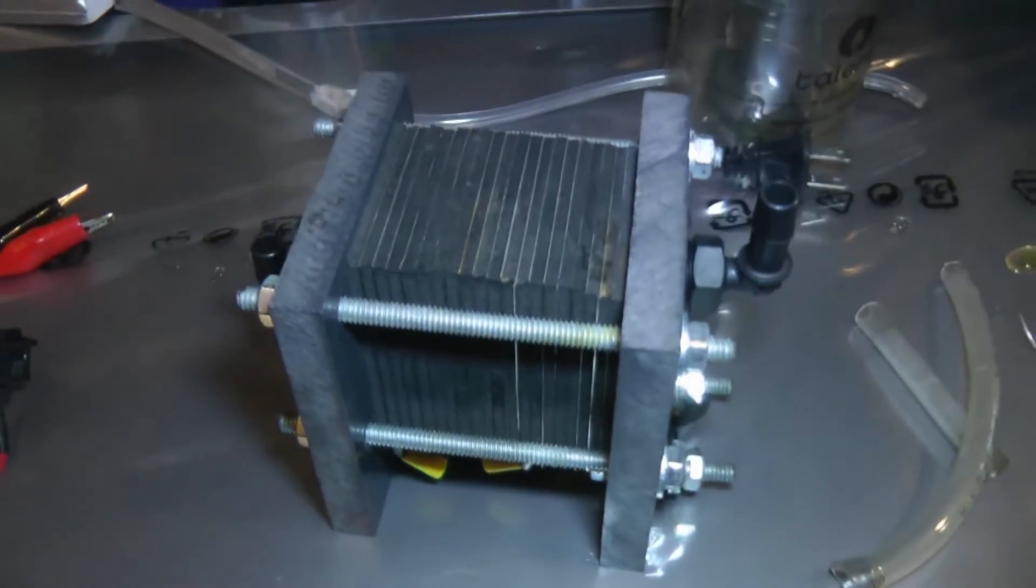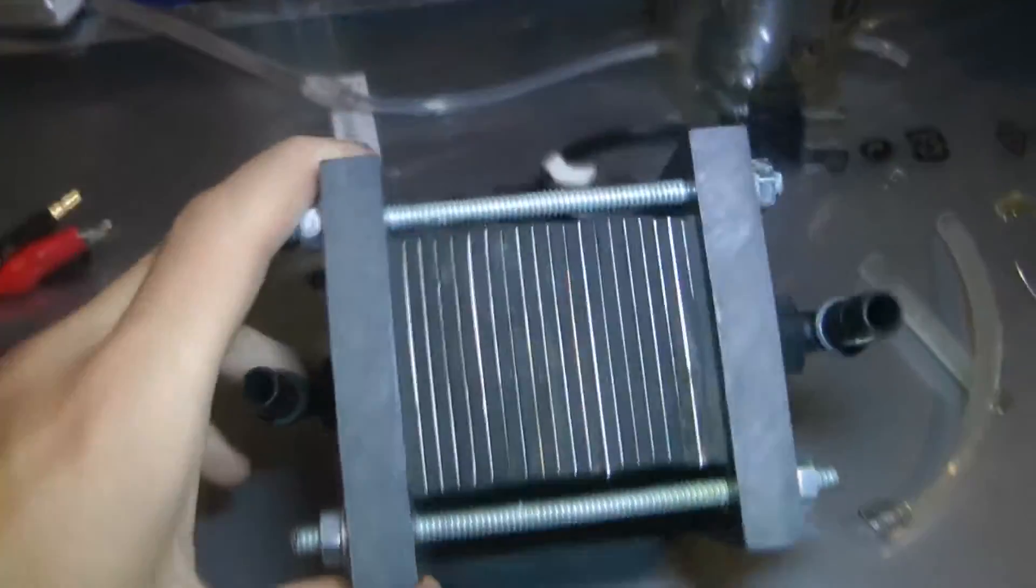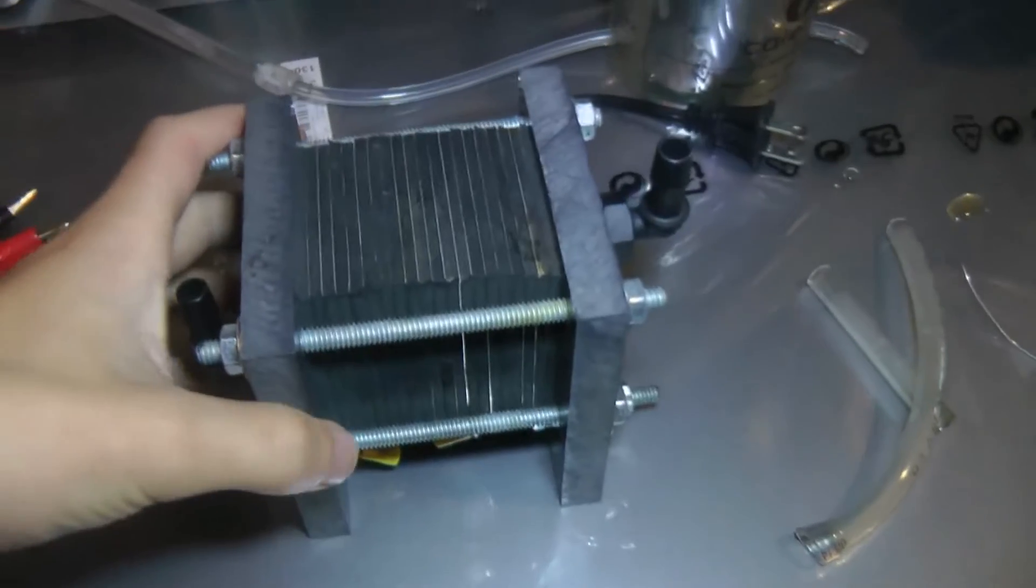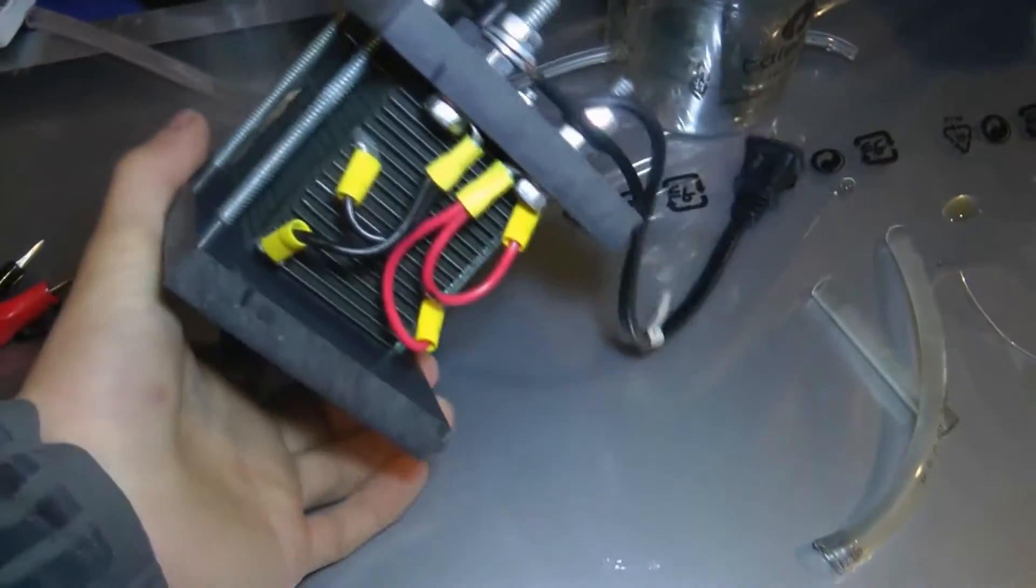So this is an HHO dry cell. I ordered this on eBay. It was around $50, which I think is a pretty good deal when you see how much gas it produces.